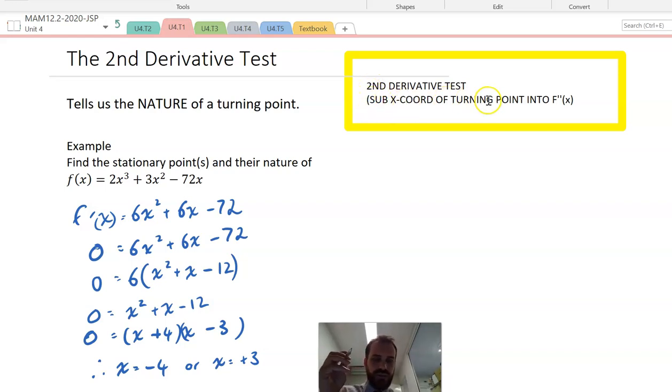So here's what we do for our second derivative. We sub the x-coordinate of our turning point into f''(x). So first of all, we need to know what f''(x) is. So f'(x) was that. So f''(x) is equal to 12x plus 6.